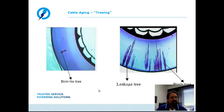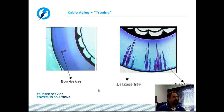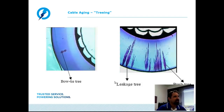Vented trees are water trees that grow from the surface of the polymer inward into the insulating system, growing in the direction of the electric field. Vented trees have a lower initial growth rate compared to the bowtie tree; however, a vented tree is capable of growing right through the entire insulation thickness. There is an illustration showing a vented tree that has migrated completely through the insulating wall thickness. Vented trees are definitely the more problematic type and will lead to eventual electrical failure or fault mode in service-aged cables.